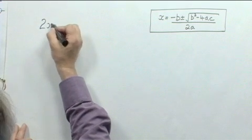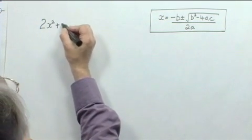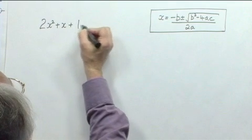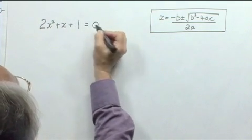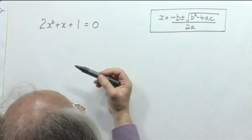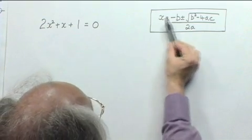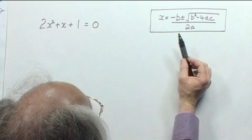Let's have a look at another example. In this example, we're going to study the quadratic equation 2x squared plus x plus 1 is 0. Again, in order to use the formula, which is here, we need to identify the values of a, b, and c.